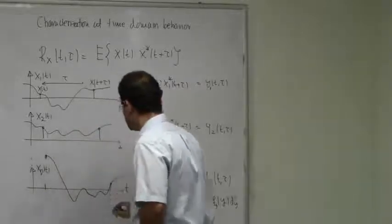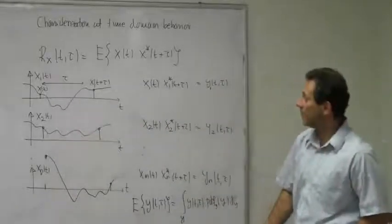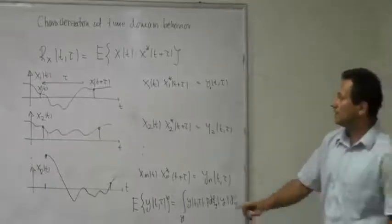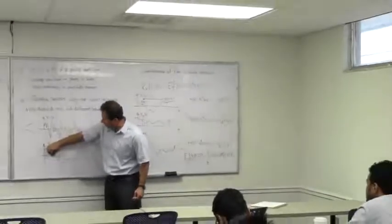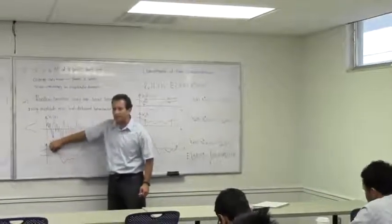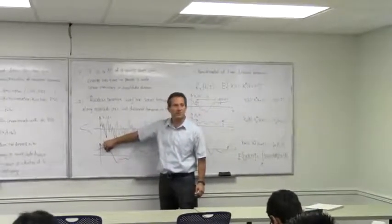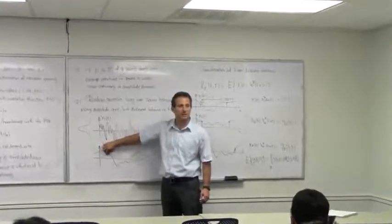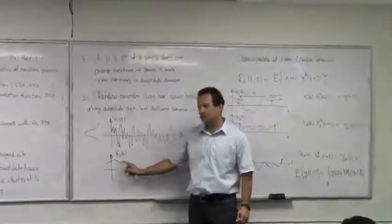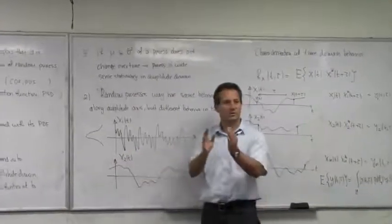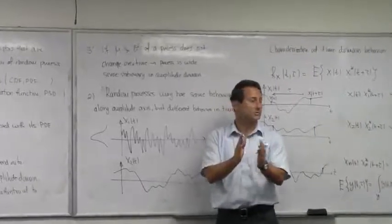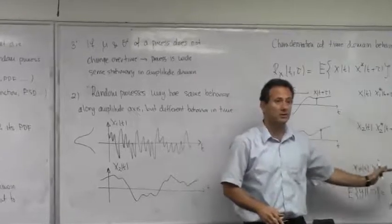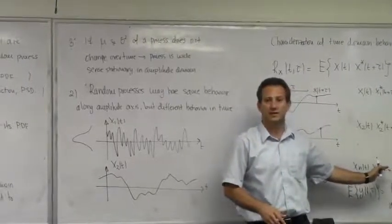How does this capture the time domain decay? Look at these two cases with small τ. If I look at small τ in this case, the two values are going to be very much the same. For small τ this signal is slow, so the values separated by small τ are very much the same, so this product is always going to be large or at least of the same sign.